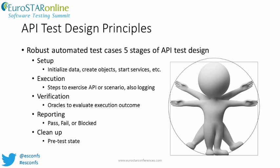The reporting stage records the outcome of the test. An automated test should be designed to log passing and failing results from the oracle, but also log unexpected terminations or exceptions during execution. In cases where the setup or test execution step fails before the oracle is called, the test case should abort and report the test is blocked. The last step is cleanup — returning the system to its pretest state by releasing memory, shutting down services, and deleting stores or files used by that test.